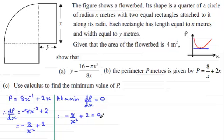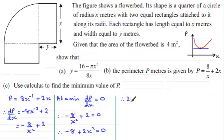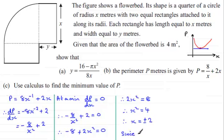I'm going to multiply throughout by x squared. If we multiply the first term by x squared, we're just left with minus 8. Next term by x squared gives 2x squared. And 0 by x squared gives 0. So if I add 8 to both sides, we'd therefore have 2x squared equals 8. Divide both sides by 2 and you've got x squared equals 4. Now take the square root of 4 and you get x equals plus or minus 2. But we know that x, being a length, has to be positive, has to be greater than 0. So therefore x must be equal to 2.